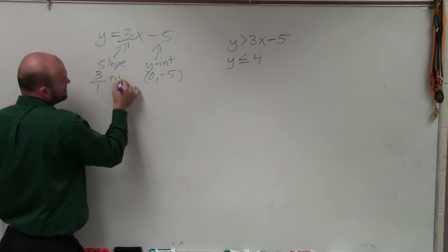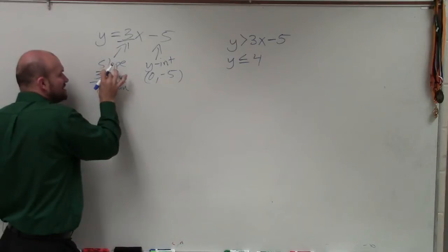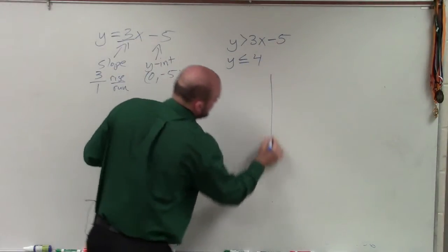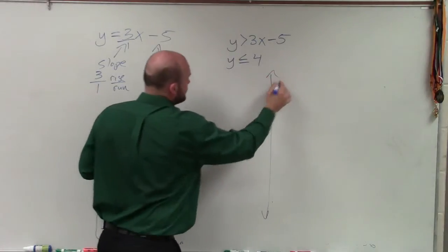And a lot of times, sometimes you'll see rise over run. But it's just the change in the y-values over the change in the x-values. Now we'll get to y is less than or equal to 4 in just a second here. But let's go and graph this first.